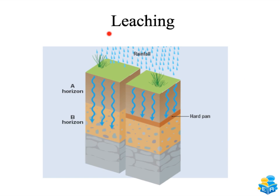The next thing you need to know is leaching. Soil leaching is the process by which soil nutrients in the A horizon are washed down to the B horizon because of heavy rainfall. This is a very bad thing for soil because the soil loses its fertility.